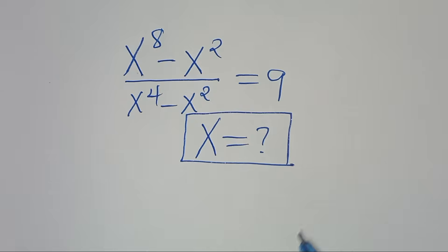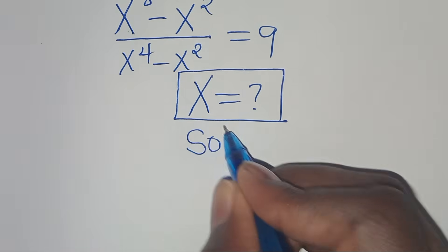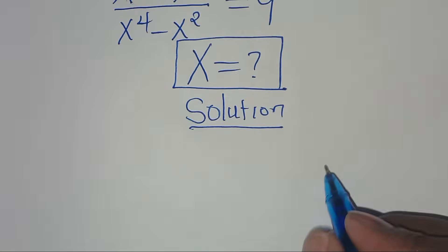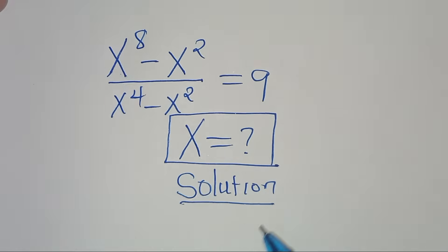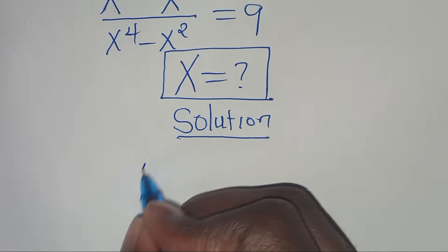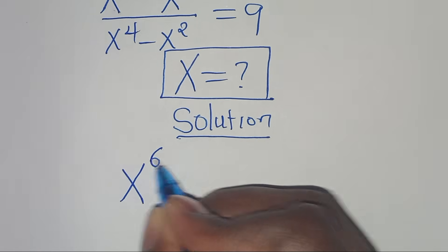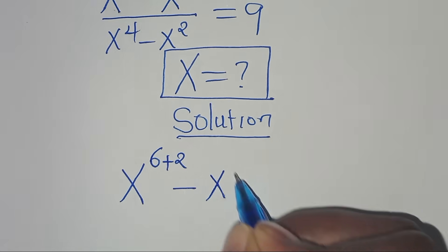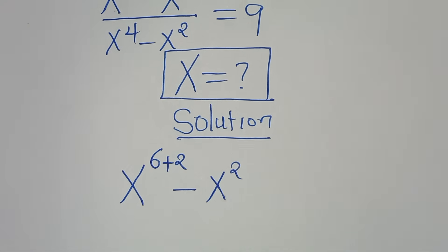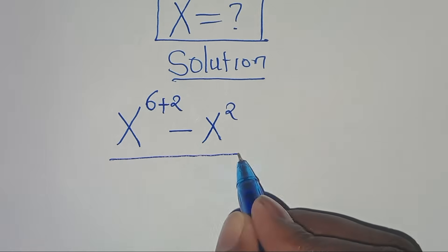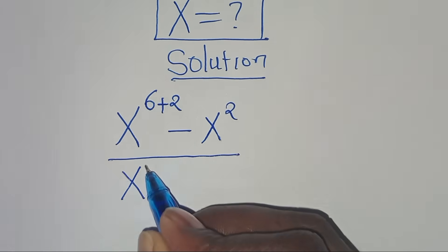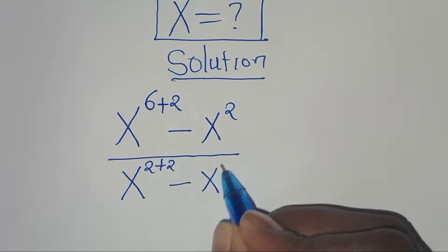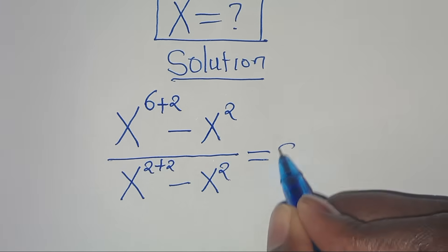Let's provide a solution. We can express x to the power of 8 as x to the power of 6 plus 2, then minus x to the power of 2, divided by x to the power of 4, which is x to the power of 2 plus 2, minus x to the power of 2 — this is equal to 9.